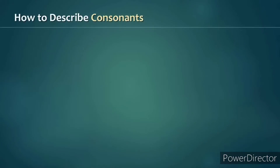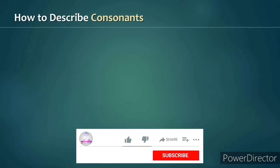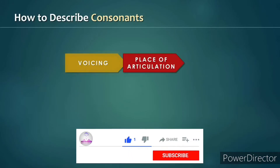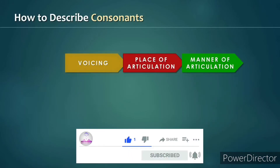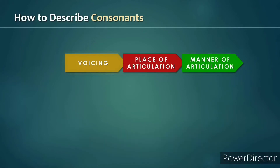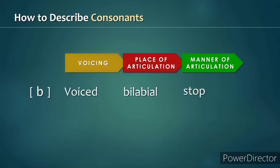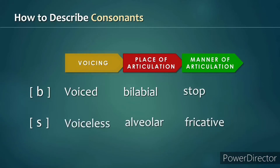We've discussed the three criteria for describing consonant sounds: voicing, place of articulation, and manner of articulation. When linguists talk about a consonant sound, they do so in that order. For example, the sound b is considered a voiced bilabial stop, and s is a voiceless alveolar fricative.